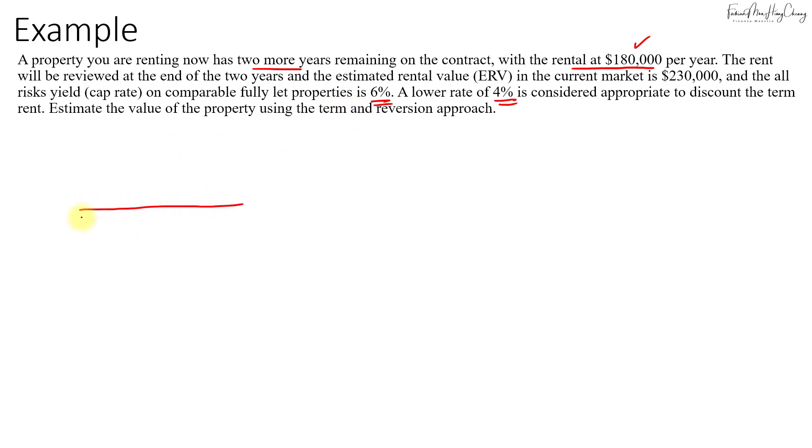Let's again draw the timeline. At time 0, in year 1, you have two more years to go. Year 1 will be $180,000. In year 2, it will be another $180,000. Then the rent will be reviewed. Potentially, it could go up to $230,000.